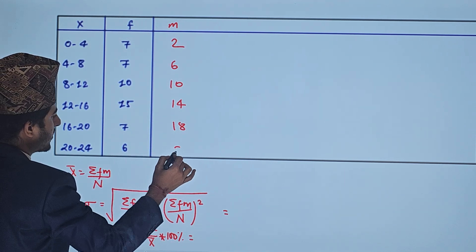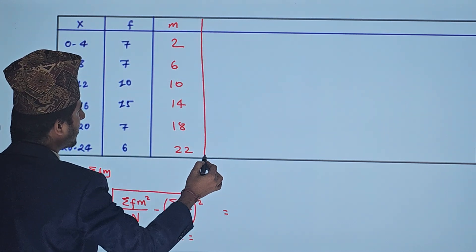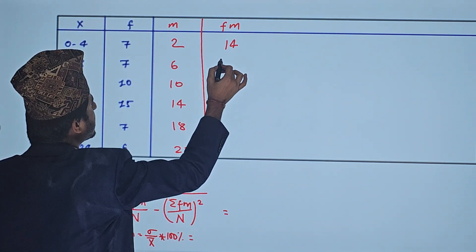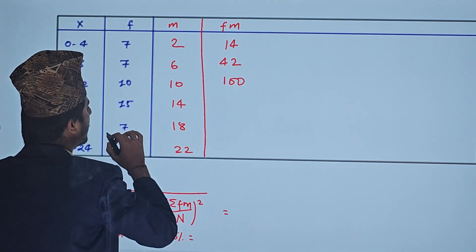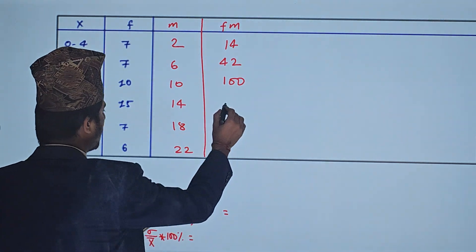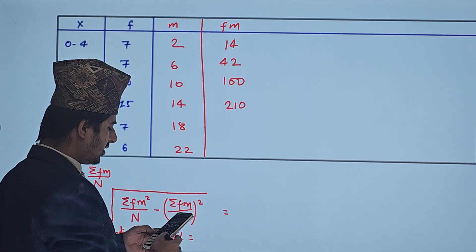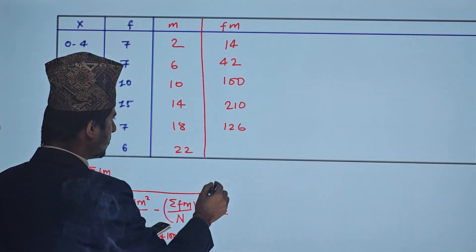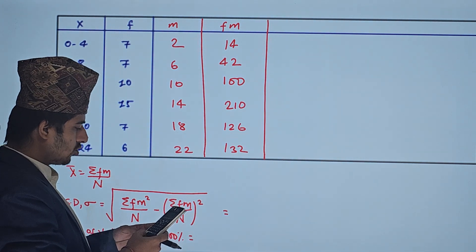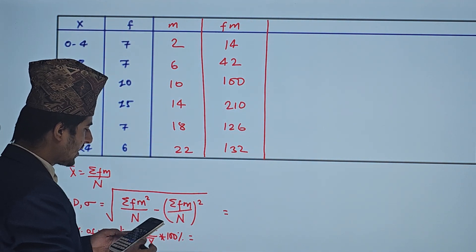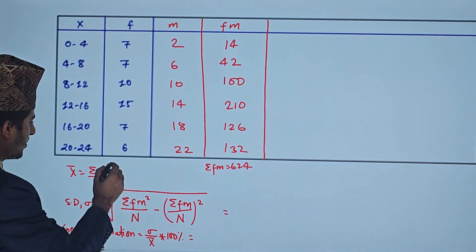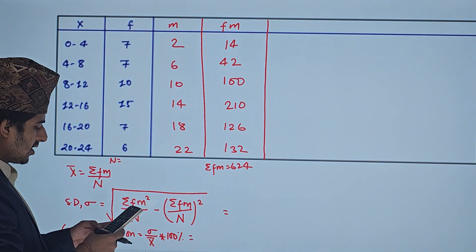From the table, the midpoints are 18 and 22. The f×m products are: 7×6 = 42, 10×10 = 100, 15×14 = 210, 7×18 = 126, 6×22 = 132. Summation f×m = 15 + 42 + 100 + 210 + 126 + 132 = 624. Total frequency n = 7 + 7 + 10 + 7 + 6 + ... = 52.